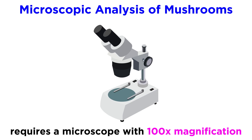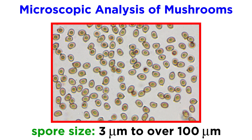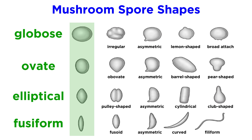Microscopic analysis requires the use of a microscope with about 100 times magnification. The key microscopic characteristic for mushroom identification is spore morphology, or the structure of spores. When looking at spores under a microscope, you generally add a droplet of water to a spore print and pipette the spore solution onto a microscope slide. The first feature to notice is the size of the spores — size will range from about 3 micrometers to over 100. Spores are diverse in their shape, being spherical, lemon-shaped, thread-like, disc-shaped, and many others.